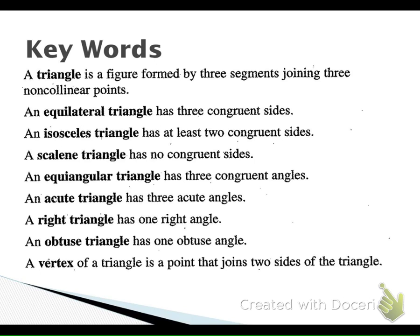We have an equilateral triangle. 'Equa' means equal, and 'lateral' means side, so three congruent sides. Isosceles has at least two congruent sides. Scalene has no congruent sides.